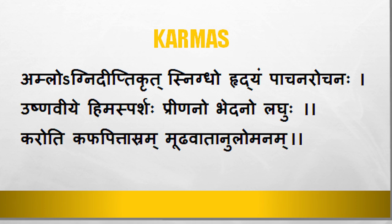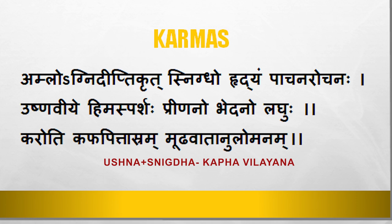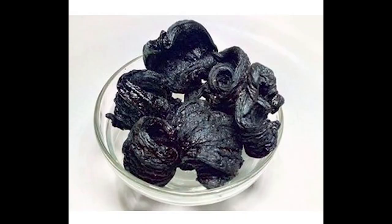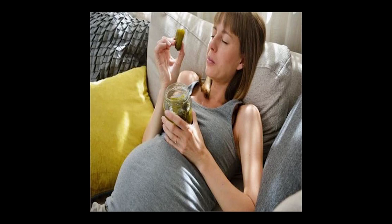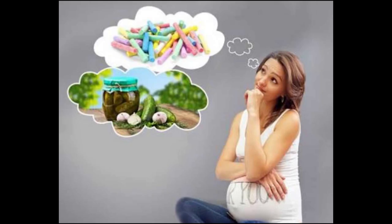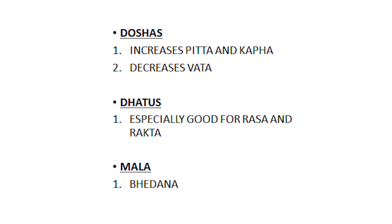As it promotes digestion and proper formation of Ahara, it also nourishes Rasadhatu. Amla Rasa dissolves and increases the quantity of Kapha — it is responsible for Kapha Vilayana — due to the association of Ushna and Snigdha attributes. A classic example is Vrikshamla, known as Kokum in the north and Kodampuli in Kerala, which is highly beneficial in obesity. Here Vilayana of Medas, which is a form of hardened Kapha, takes place. Amla Rasa has properties similar to Pitta and therefore increases Pitta. It also increases Rakta, which is evident when there is Rakta Kshaya, as there is a craving for Amla Rasa during pregnancy due to reduction in blood volume. Due to its Snigdha and Ushna properties, it decreases Vata Dosha.